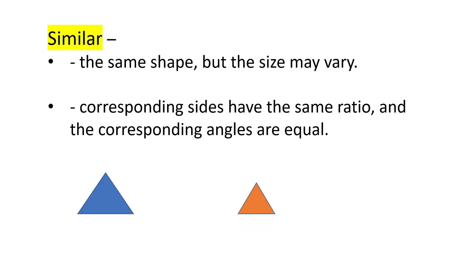The term similar means that you have the same shape but a different size. You also have corresponding sides with the same ratio. So these two triangles have a two to one ratio.